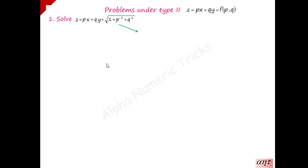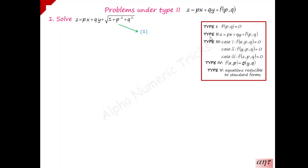This is equation 1. In Clairaut's form, all five variables are present: x, y, p, q, and z. The term px appears separately, qy appears separately, and the f(p,q) term appears separately, all equated to z. Using this structure, you can identify this problem as Type 2, that is Clairaut's form.